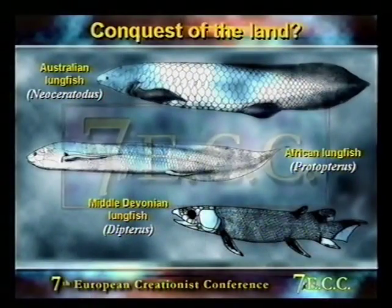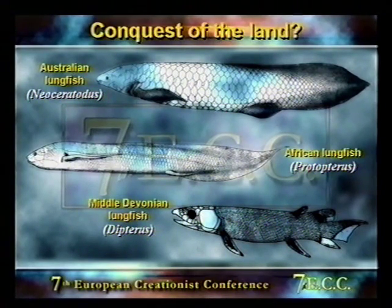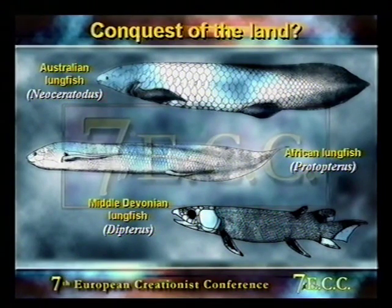In 1872, a worker called Günther fully described the lungfishes and argued they were completely unrelated to amphibians. Günther was also the first to recognize that certain fossil fishes like Dipterus in the Middle Devonian were also forms of lungfishes. Günther was a firm opponent of Darwinism who used the existence of these living fossils persisting from the Paleozoic as evidence against Darwinism.